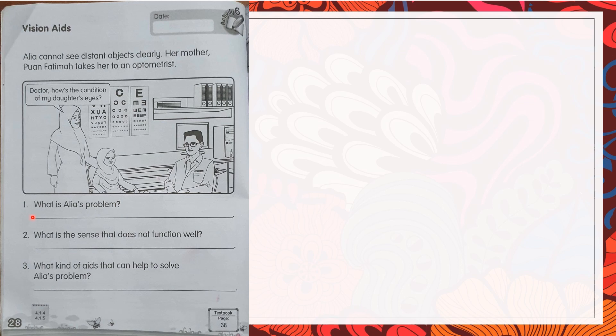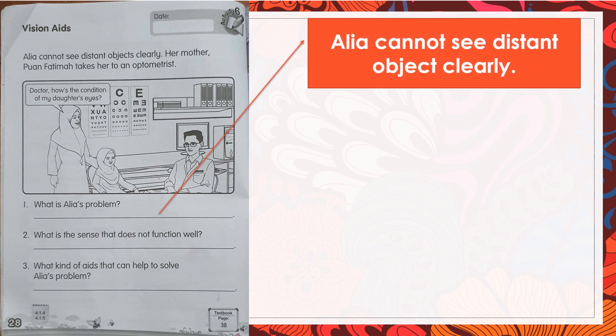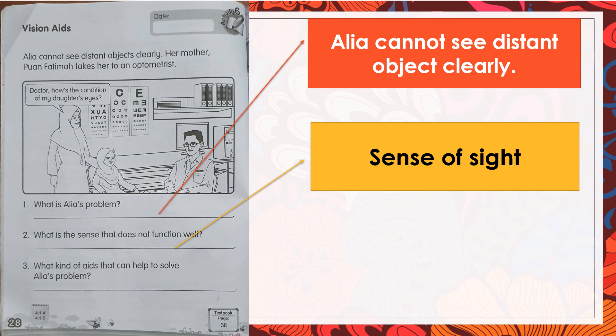The first question, what is Alia's problem? Alia cannot see distant objects clearly. Tulis di sini nanti. And second one, what is the sense that does not function well? Apakah deria yang tidak berfungsi dengan baik? Yes, sense of sight. Okay, tuliskan di sini nanti ya, di nombor dua.